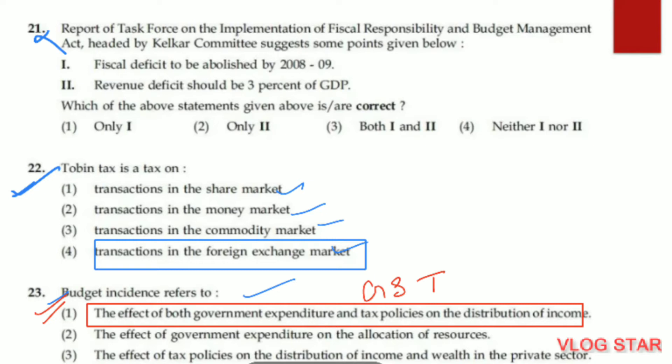Question number 22. Tobin tax is a tax on transactions in the foreign exchange market — option four is correct. Question number 23. Budget incidence has two main elements: government expenditure and tax policy. The first option is correct — it refers to the effect of both government expenditure and tax policy on the distribution of income.